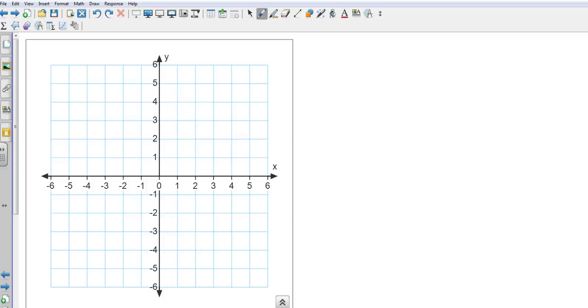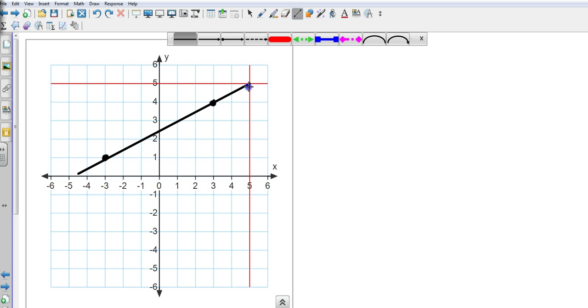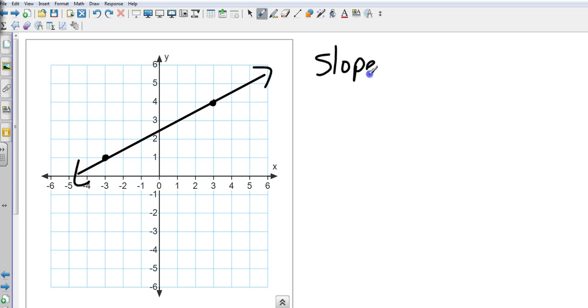So negative reciprocal and when I multiply them together, they equal negative 1. Now, finally, if they give us a line. And let's say it's from here to here. And they draw that in just like that. And they ask us, what's the slope? There's two ways to do this.